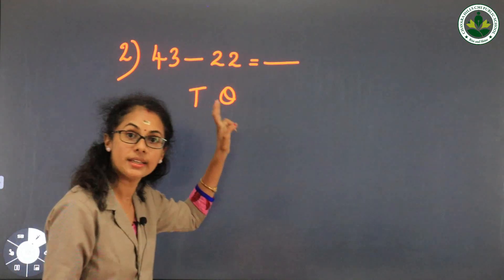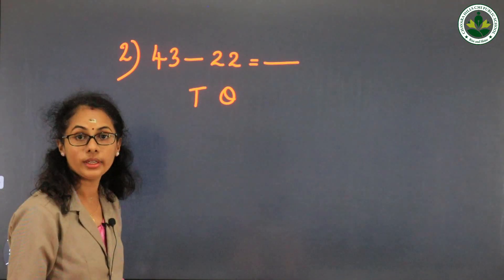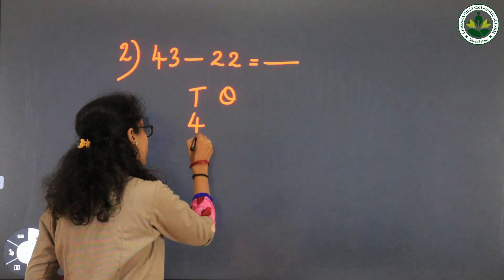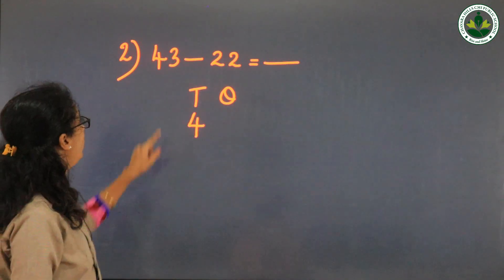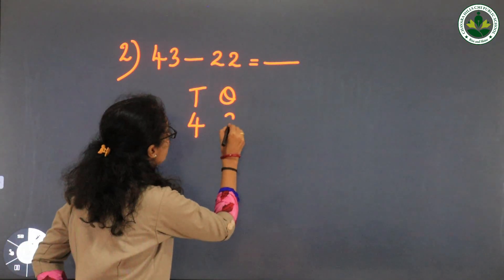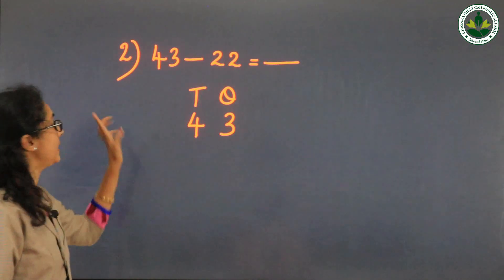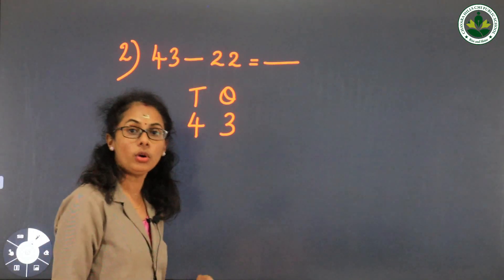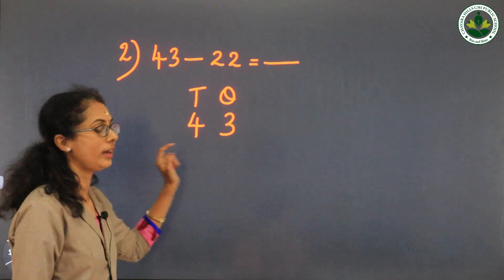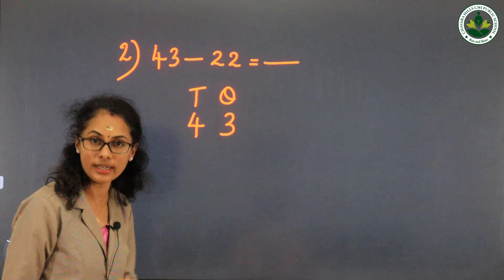43 has 4 tens and 3 ones. Write 4 in the tens column and 3 in the ones column. Then minus 22: how many tens and ones in 22? 2 tens and 2 ones. Write 2 in the tens column and 2 in the ones column.